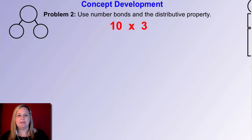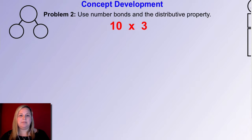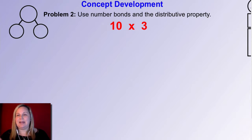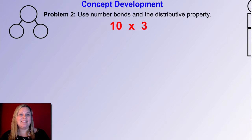Let's look at the next problem: 10 times 3. How many threes are in 10 times 3? Ten threes — because the first factor is the number of groups and the second factor is how many are in each group. What are some ways we can break apart 10? I know I can have 5 and 5, or 6 and 4, or 7 and 3, or 8 and 2. Those are some different ways to break apart 10.